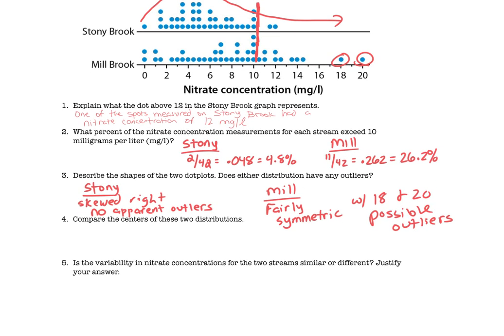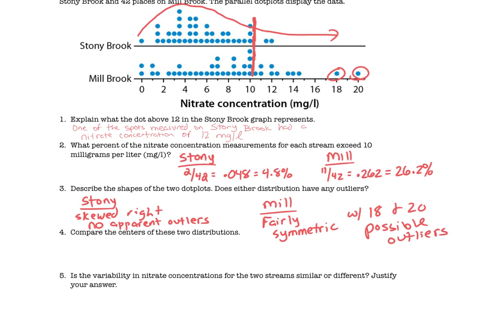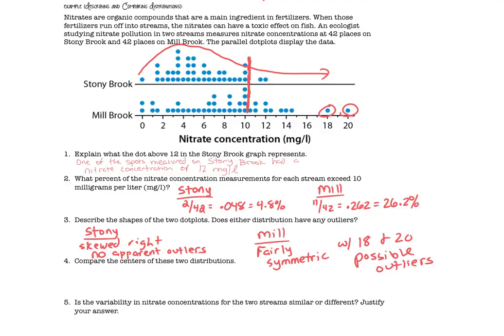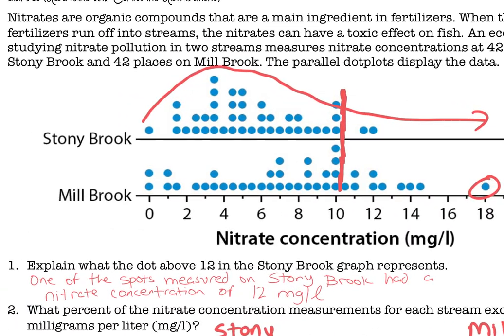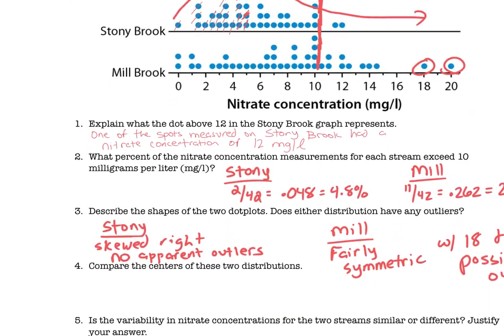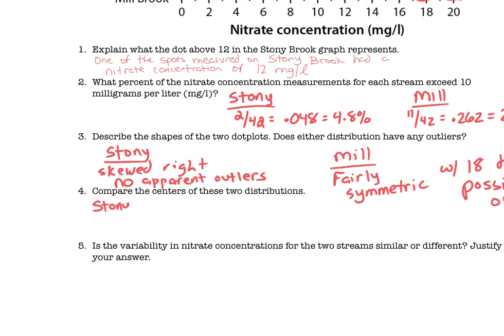Then it asks us to compare the centers of those two. So where's the middle dot at? Well, if you look, the middle dot, so 42 dots each, what we could do is we could really count. If you look at Stony Brook, we could count and find that 21st dot. Counting through, that 21st dot right here is sitting above the number five. So the median for Stony Brook, the median is at five milligrams per liter.